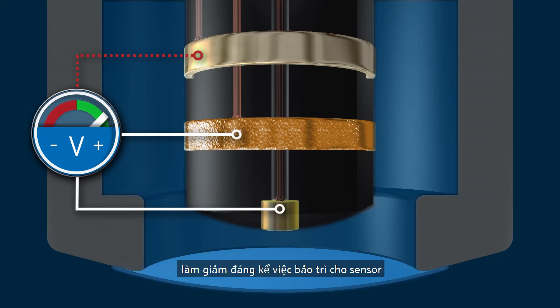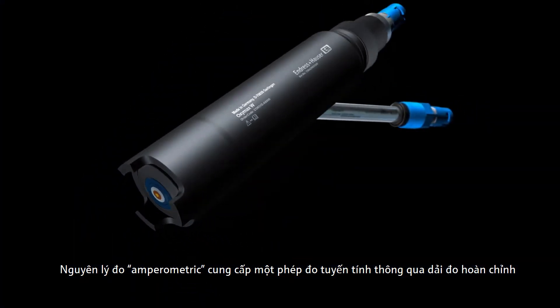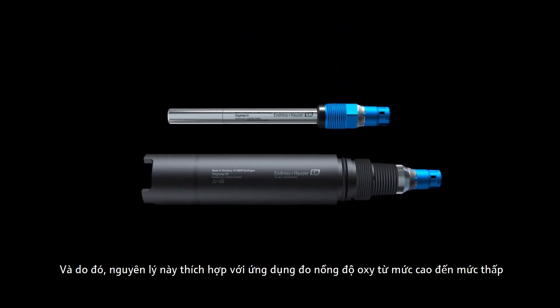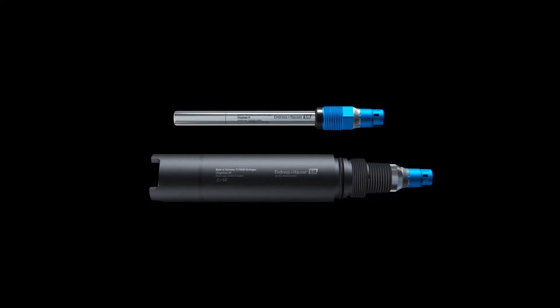The amperometric measuring principle offers a linear measurement via the complete measuring range and is thus suitable for high and low partial oxygen pressures and concentrations down to trace level.